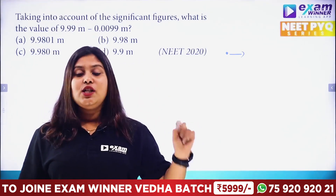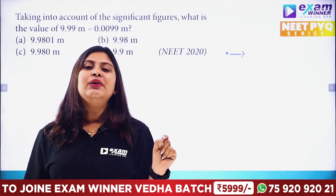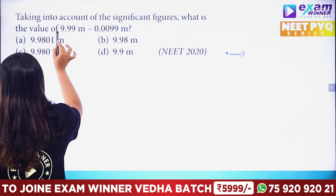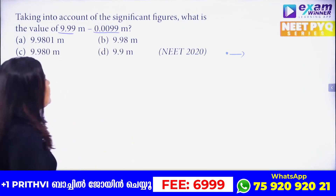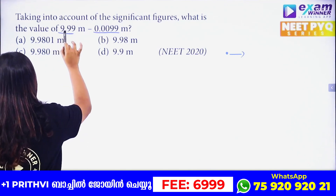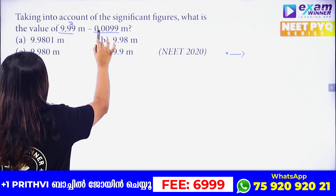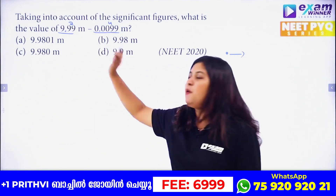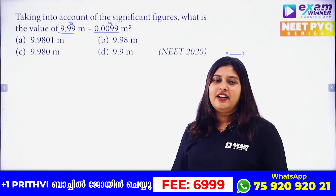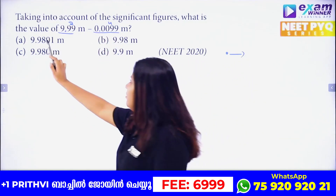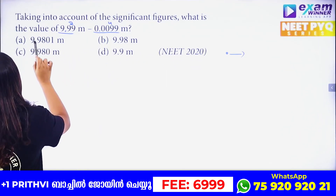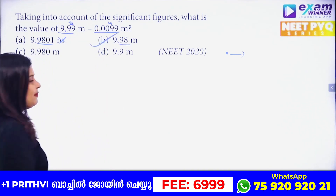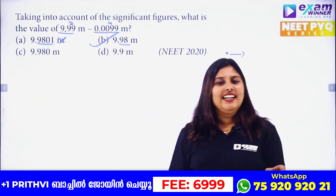In addition and subtraction, the number of decimal places in the answer is determined by the term with the fewest decimal places. For 9.99 minus 0.0099: 9.99 has 2 decimal places and 0.0099 has 4 decimal places. So the answer is rounded to 2 decimal places. Option B is the correct answer.